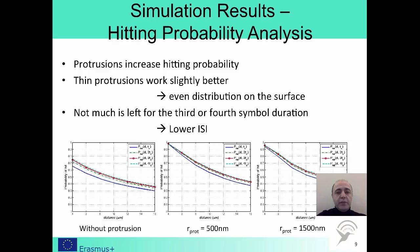The leftmost graph is the regular case without protrusions, whereas we have protrusions with radius 500 and 1500 nm for the other two graphs. The dark blue curve at the bottom of each graph depicts the reception during the current time slot, then come the second, third, and fourth time slots as you go up. We can see that using protrusions improves the probability of hit. This is well expected since protrusions have the effect of moving the receiver's surface closer to the transmitter. We also observed that having many thin protrusions works slightly better compared to fewer thick ones, since it allows an even distribution of protrusions on the receiver's surface. More importantly, earlier reception of the messenger molecules and their removal from the diffusion environment helps reduce residual messenger molecules in following symbol durations, resulting in lower inter-symbol interference.